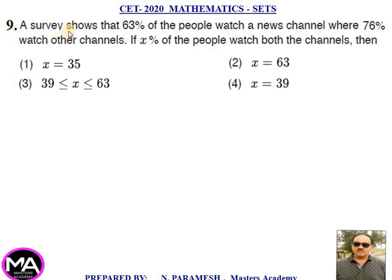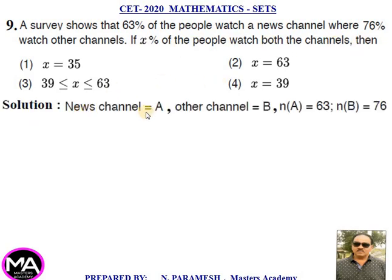Ninth question. A survey shows that 63% of the people watch a news channel, where 76% watch other channels. If x percent of the people watch both the channels, four options are given. Solution: News channel is A, other channel is B. N(A) = 63, N(B) = 76. Let N(A ∩ B) = x.